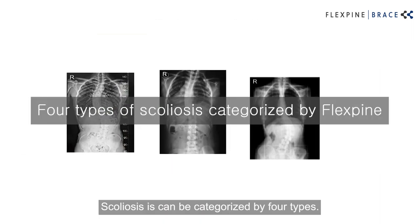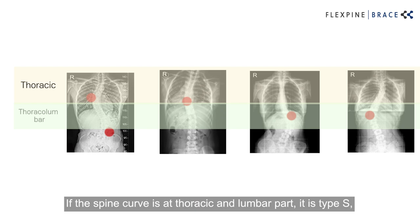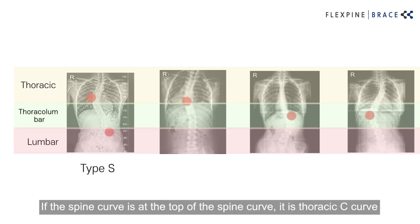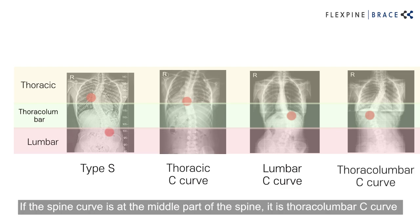Scoliosis can be categorized into four types. If the spine curve is at the thoracic and lumbar parts, it is type S. If the spine curve is at the top of the spine, it is a thoracic C curve. If the spine curve is at the bottom part, it is a lumbar C curve. If the curve is at the middle part of the spine, it is a thoracic lumbar C curve.